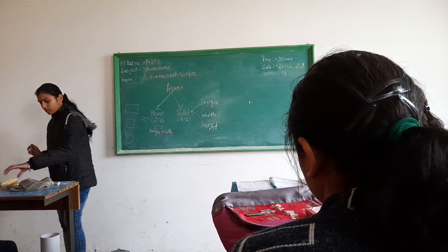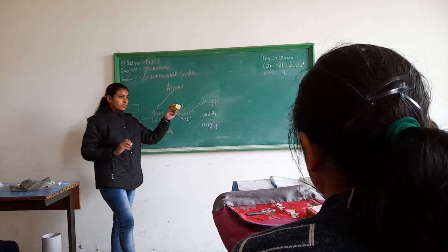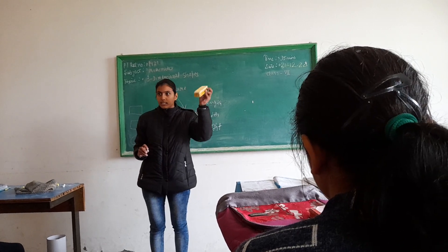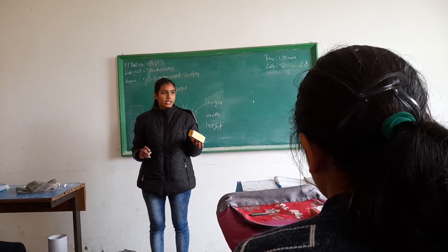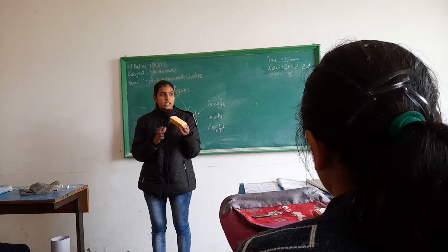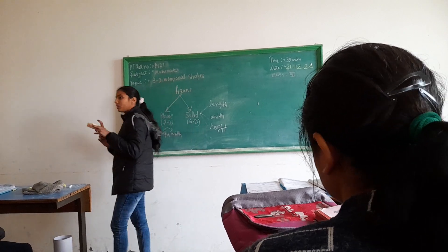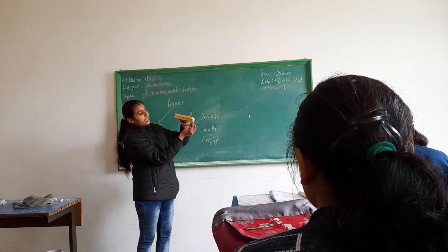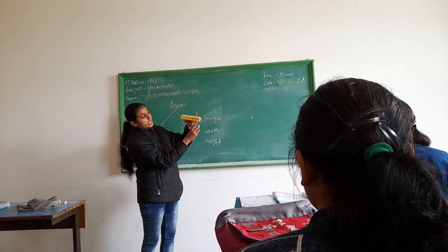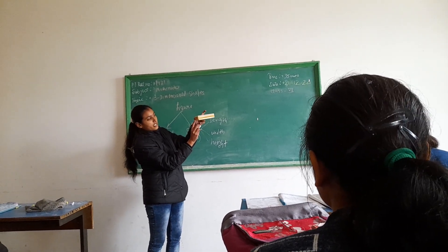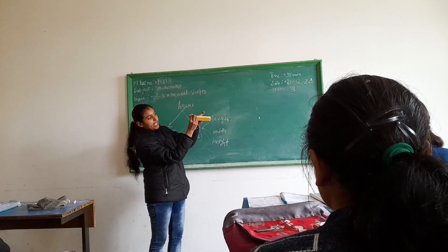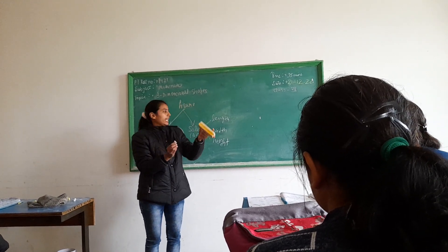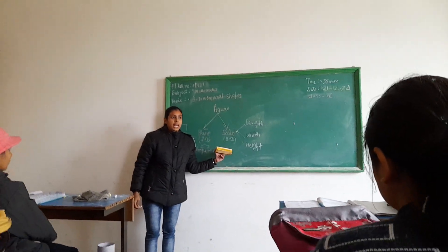Let me show you. What is this? Duster. Some of you know what a duster is. So basically, if you are talking about the dimensions of this duster, you can see length, width, and height — three dimensions. So this is a solid figure. Just as we have about a different shape, we have a 2D shape.